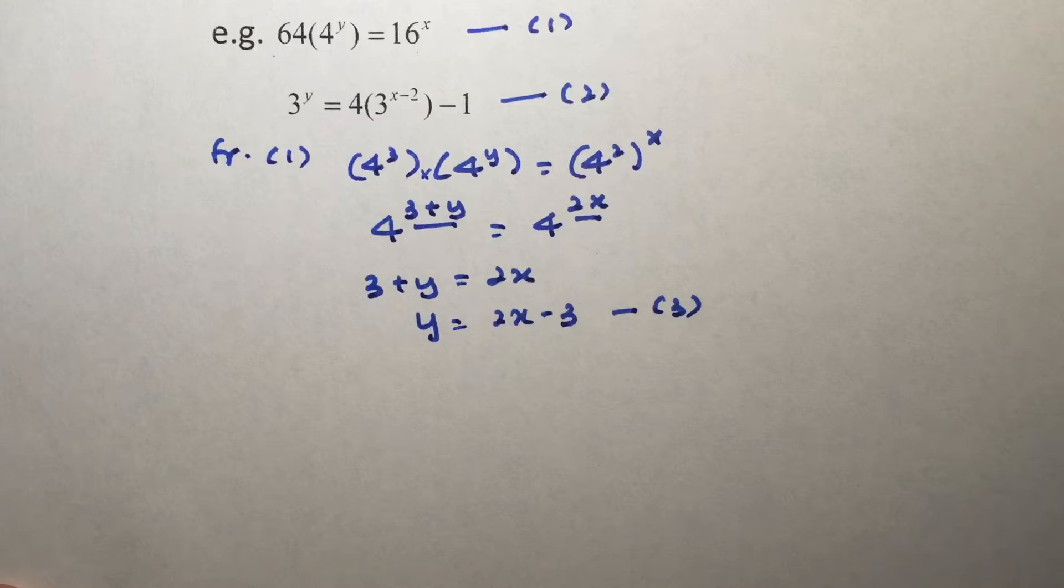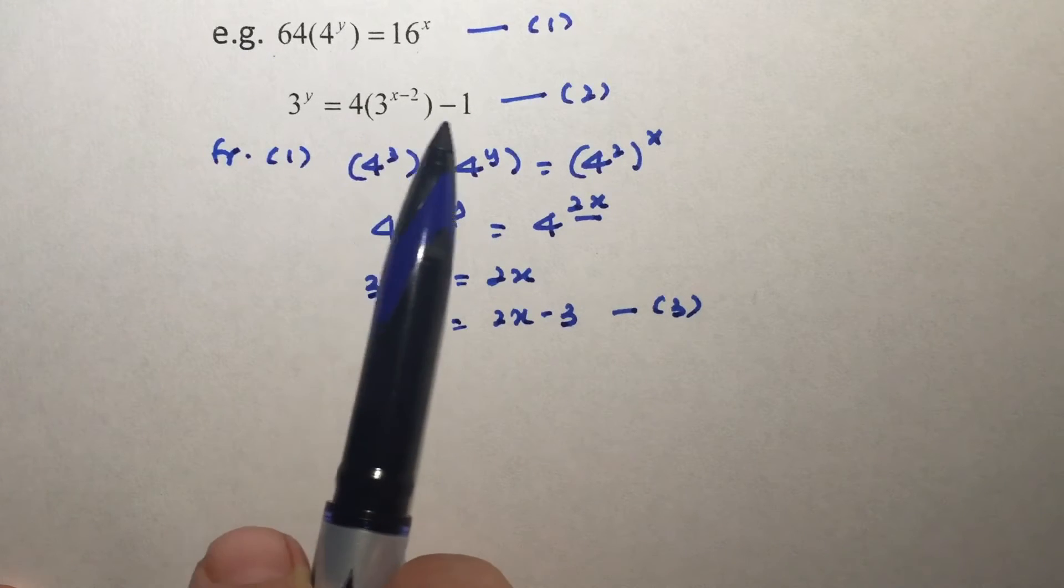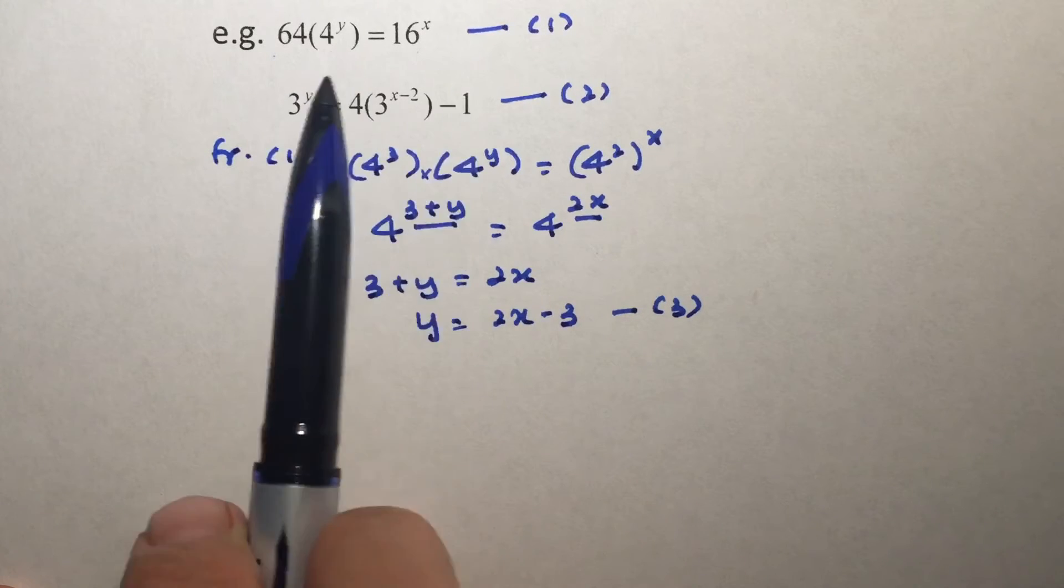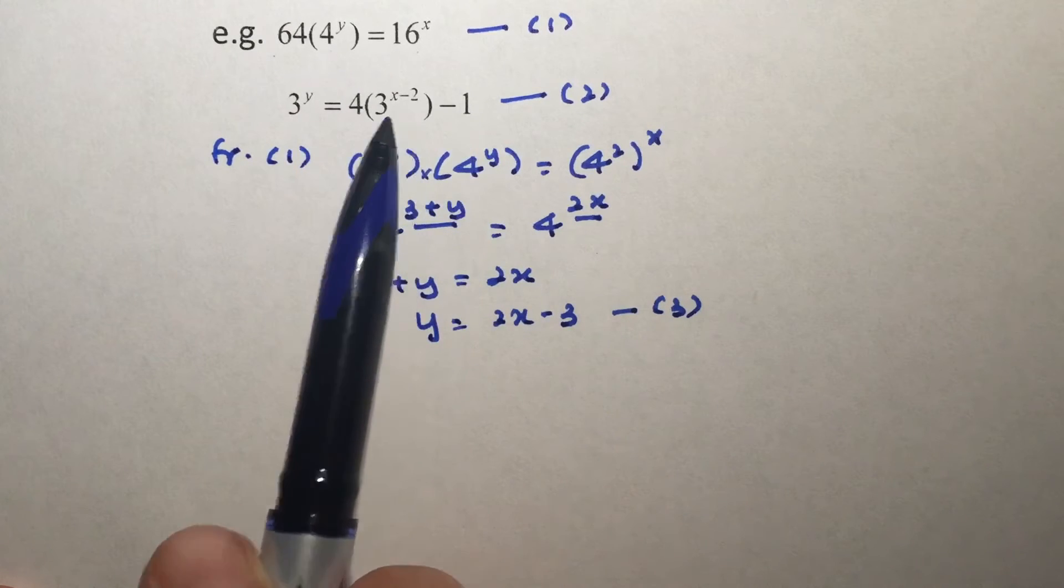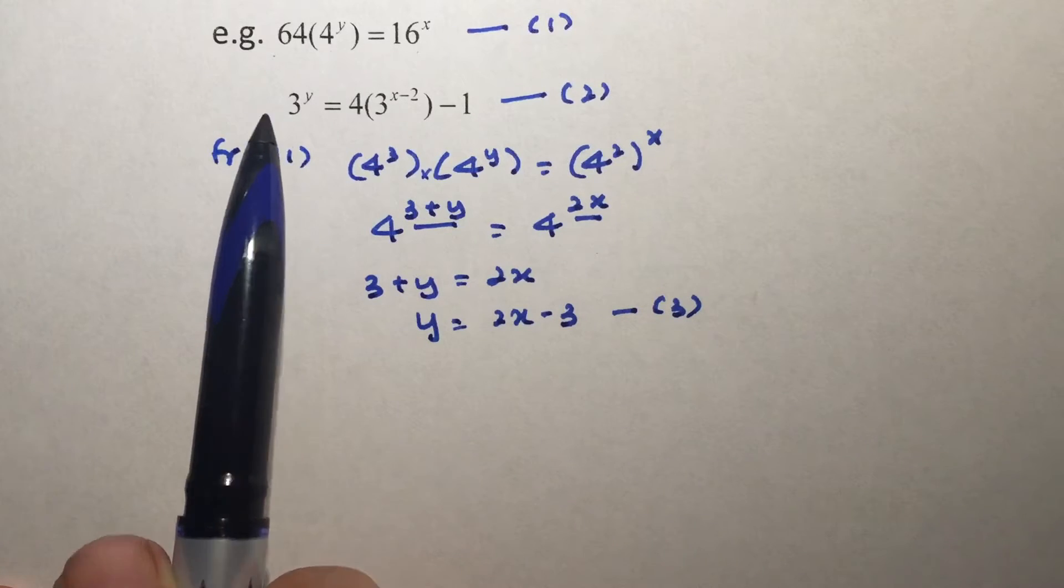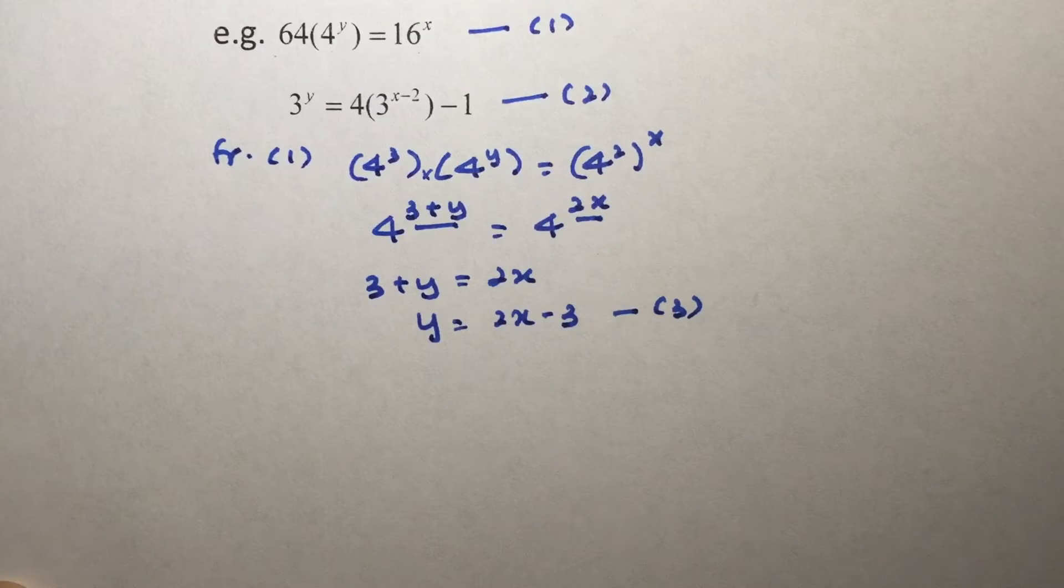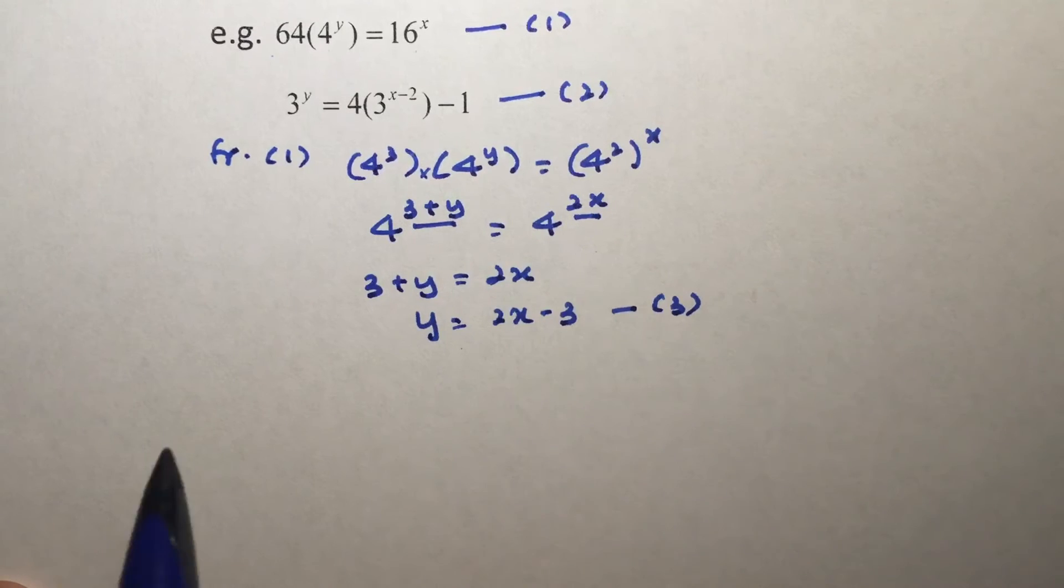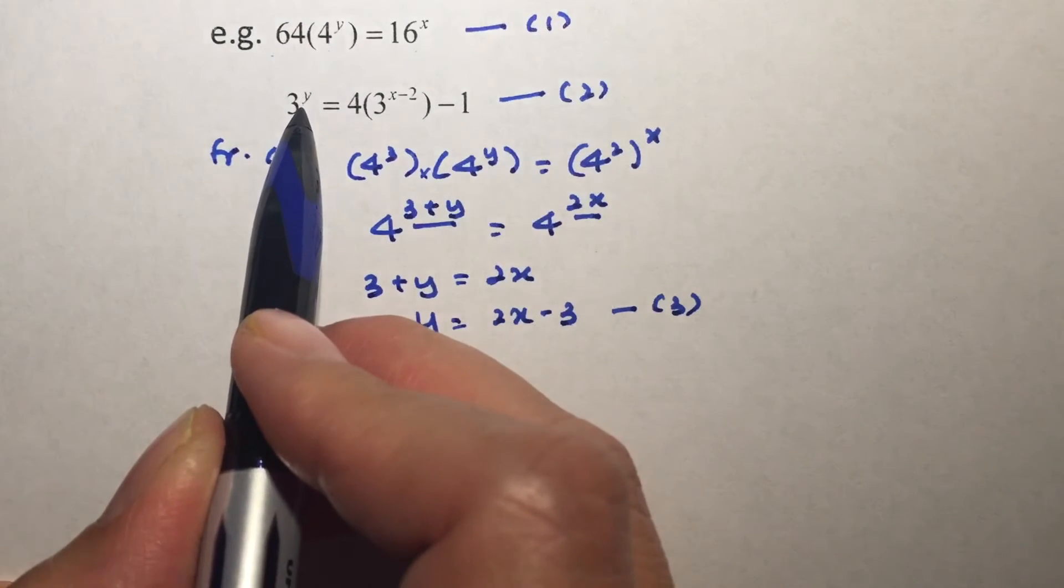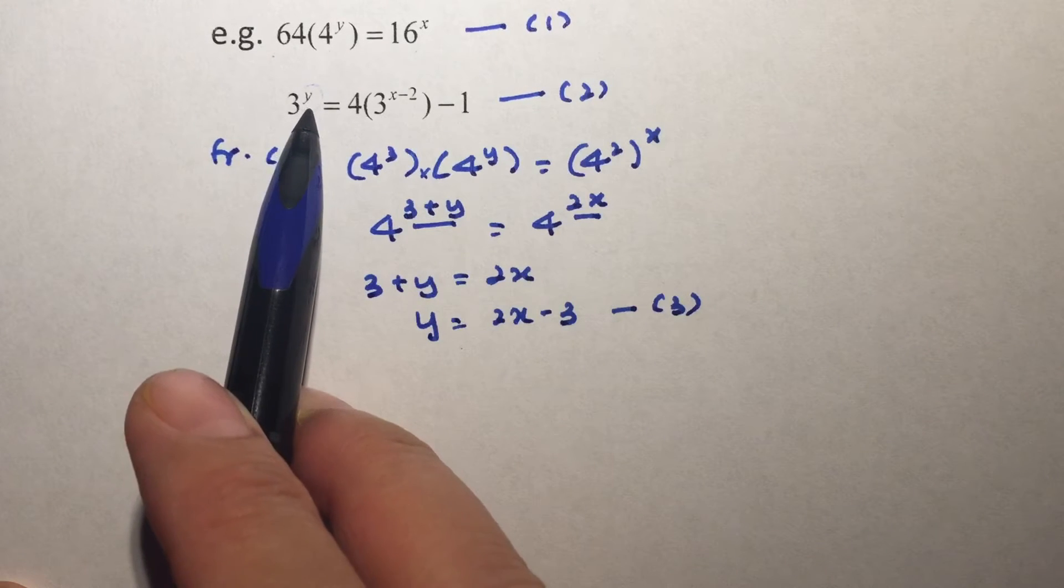Now for equation 2, it's a little bit tricky for this question because you will realize there is a subtraction here. And no matter what we do, we will not be able to combine this using the law of the indices into a single term with base 3 and having a single term with base 3 on the left-hand side as well. So what now? What else can we do? Now don't forget, we already have y equals to 2x minus 3. So what we can do is that we can do a substitution here. I know it seems kind of strange, but we can actually substitute the exponent.